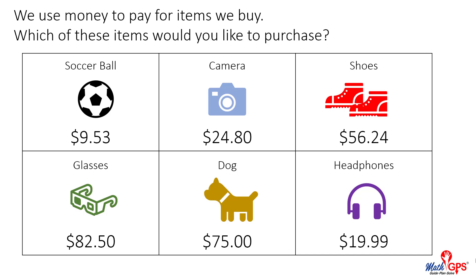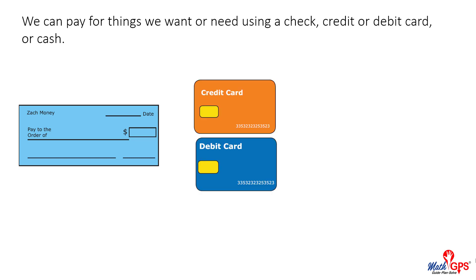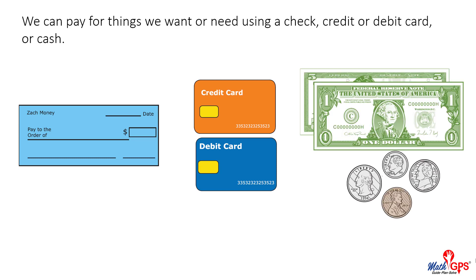We use money to pay for items we buy. Which of these items would you like to purchase? We can pay for things we want or need using a check, credit or debit card, or cash. In this lesson we will count bills and coins to make purchases.